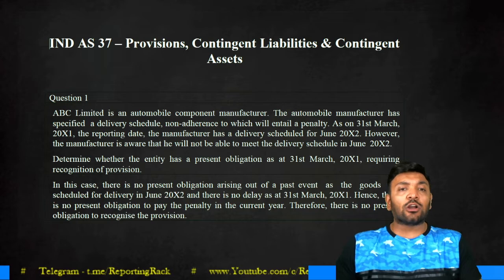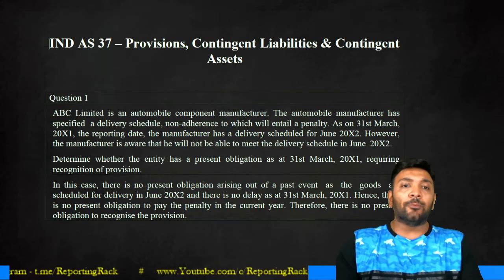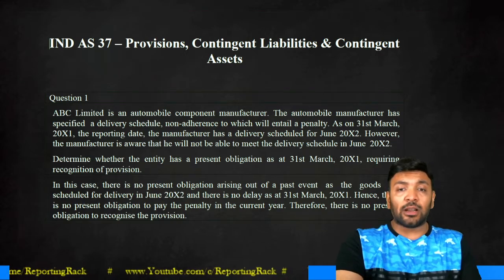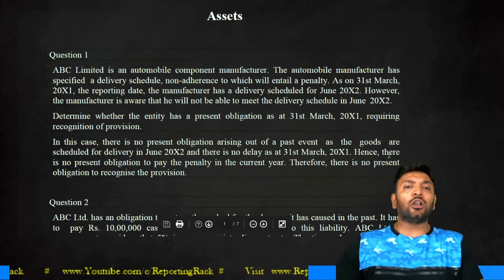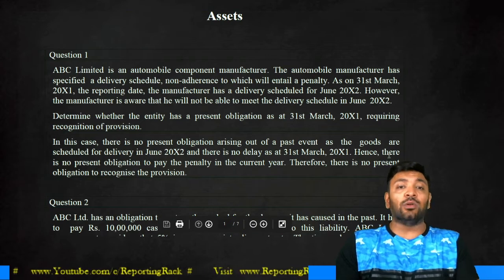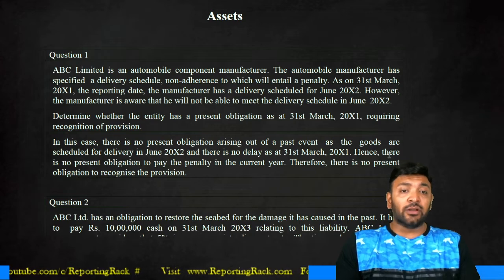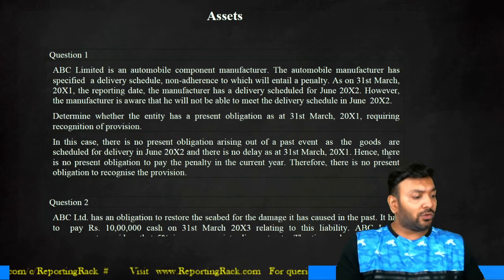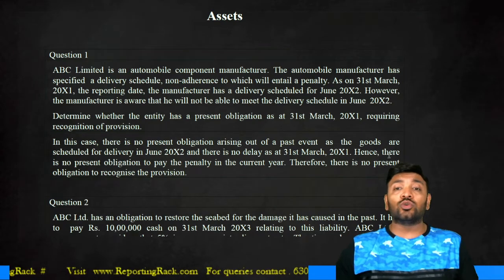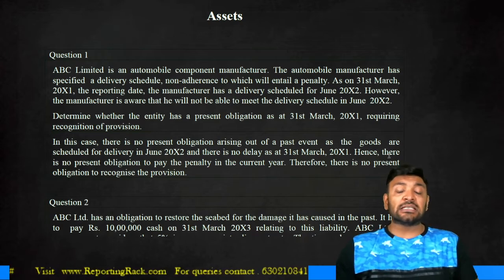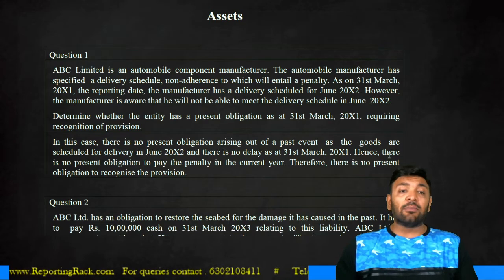We are discussing Ind AS 37. Question number one: ABC is an automobile component manufacturer. The automobile manufacturer has a specified delivery schedule, and non-adherence will entail a penalty. On 31st March, which is the reporting date, the manufacturer had a delivery schedule for June 2012. However, the manufacturer is aware that he will not be able to meet the delivery schedule in June 2012. Determine whether the entity has a present obligation on 31st March.